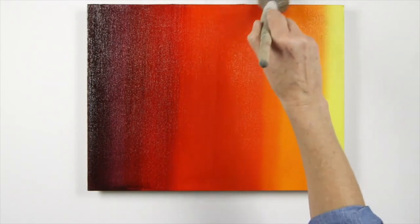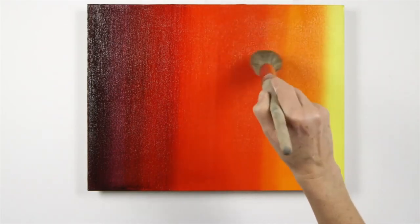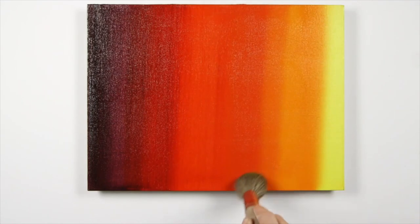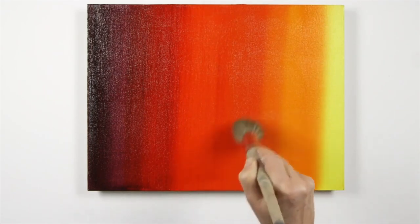Finally, using a very soft dry hake or badger brush, you can delicately skim the surface of the blend like this to take away the brush marks and smooth out your blend.